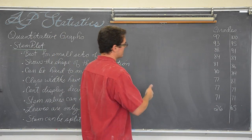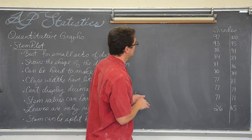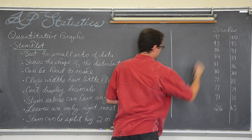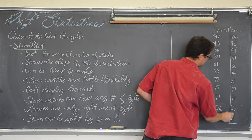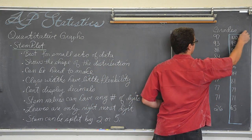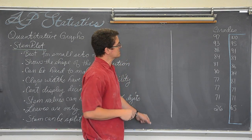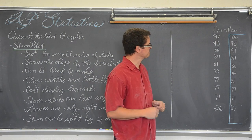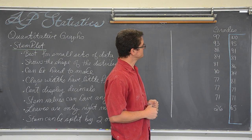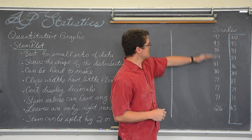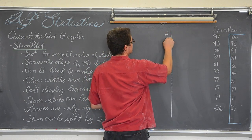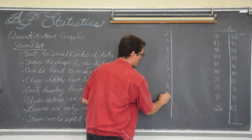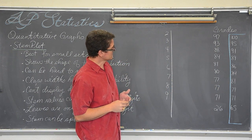So I am going to look at my grades here and I want to make a stem plot. I got scores somewhere in the 90s, 80s, 70s, and I got the weird 26. That means my stem can be 2, 3, 4, 5, 6, 7, 8, or 9. We got a 26, so 2 | 6. We have a 71, a couple of 77s, an 80, 81, 84, 88, 93, and 97.